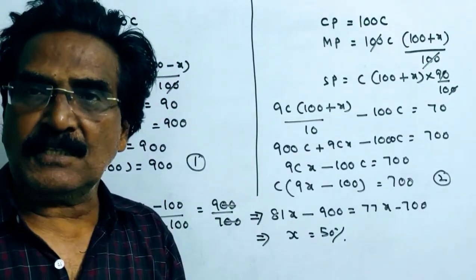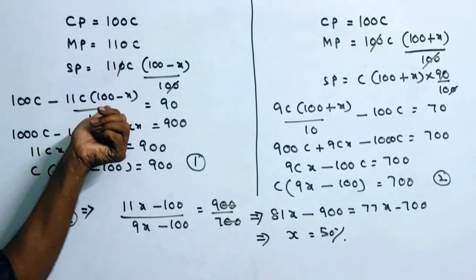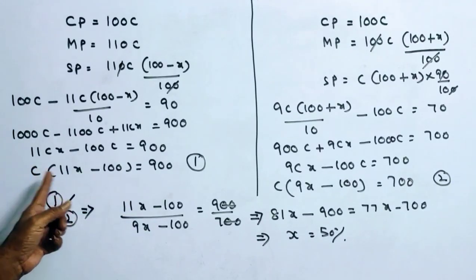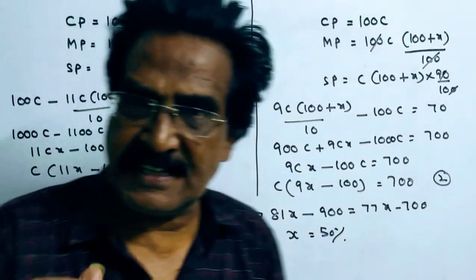Here the loss is Rs.90. So loss means cost price minus sold price is equal to 90. This implies C into 11x minus 100 is equal to 900. Say this is equation 1.